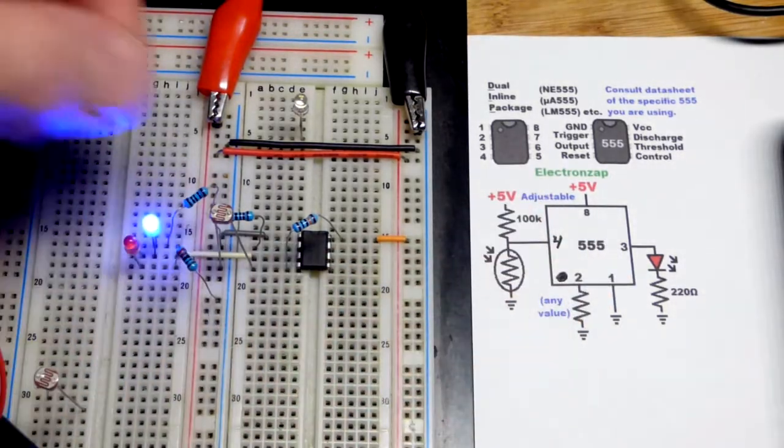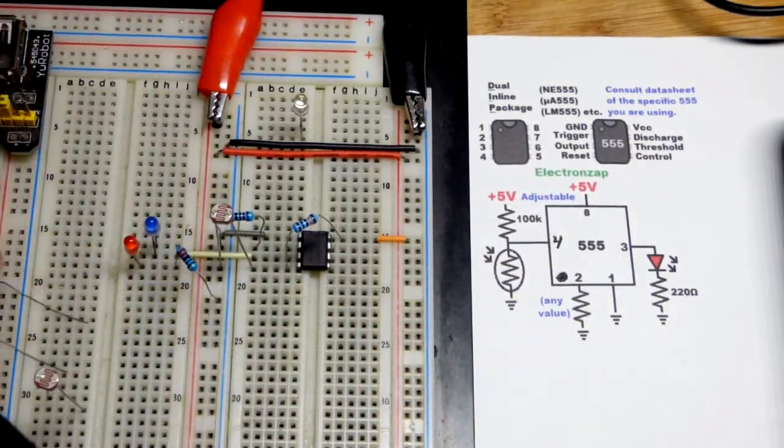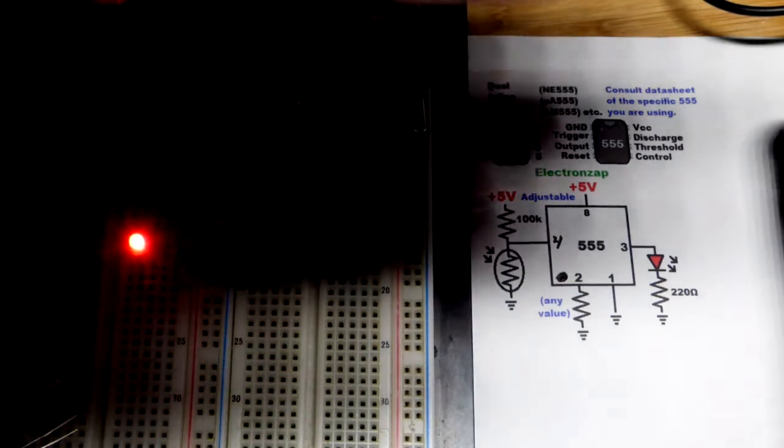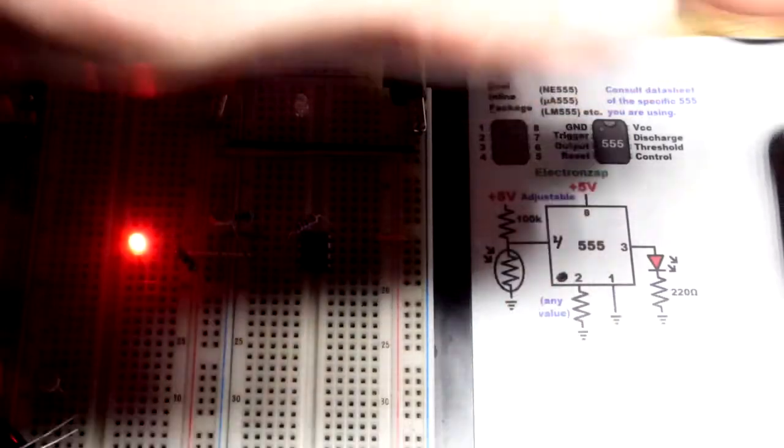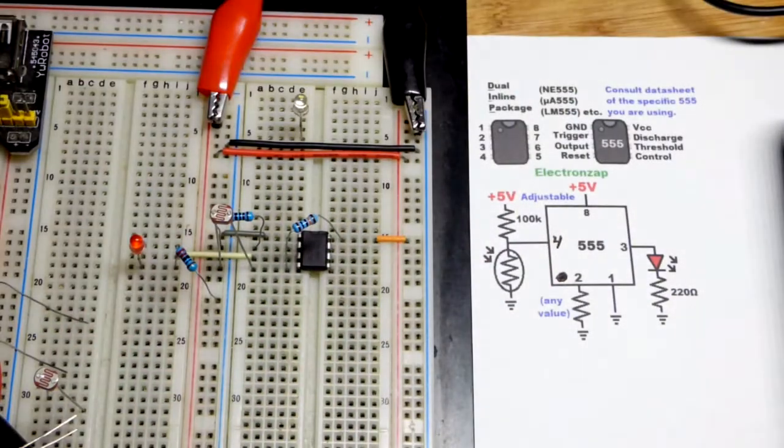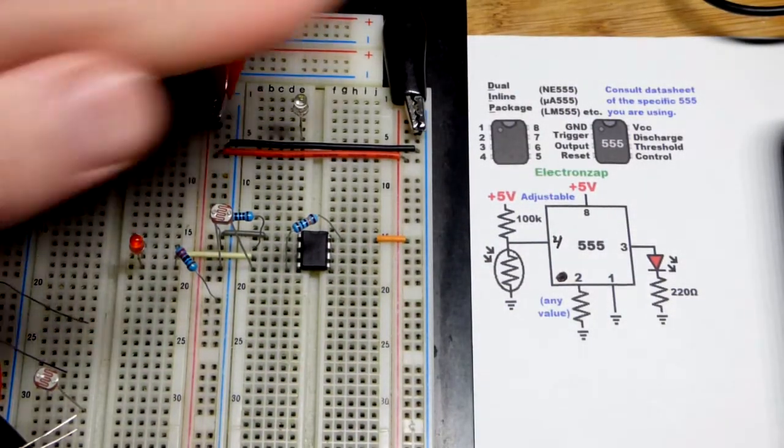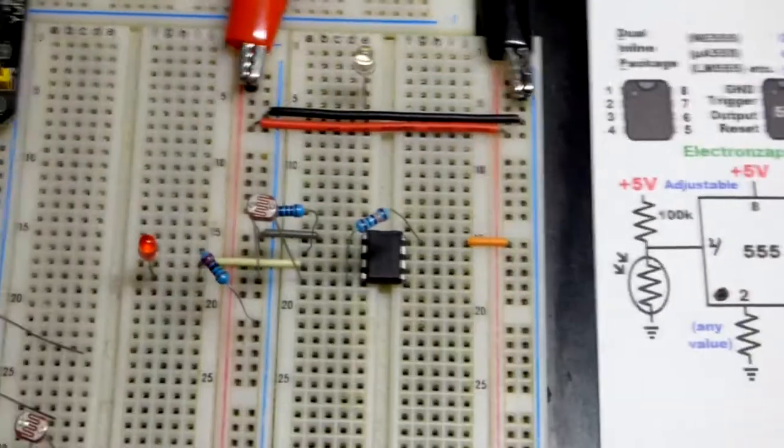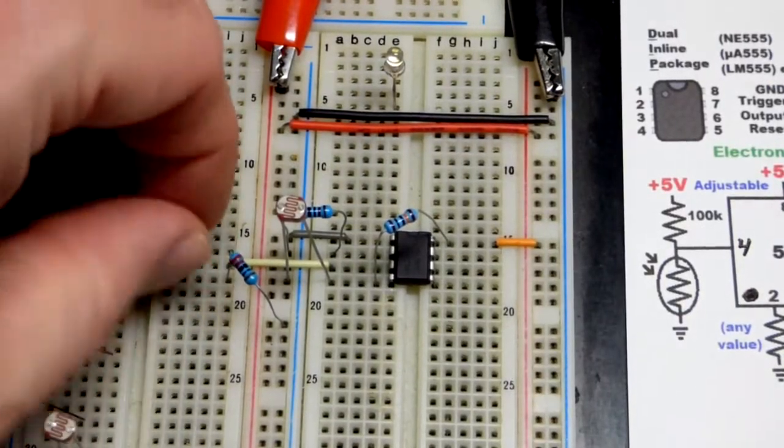So the way we have this wired up, we just want light to happen when we get it dark enough there. And if we want to make this a night light though, the red LED is not the best choice. We'll zoom in so we can get a better look.